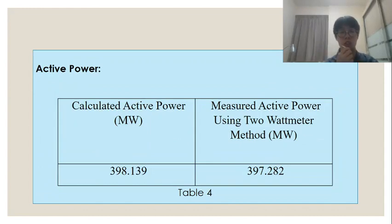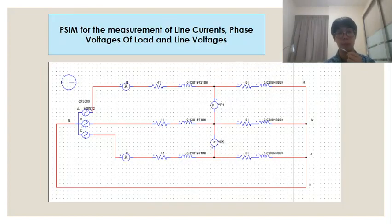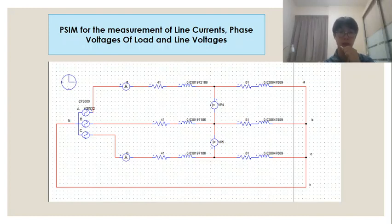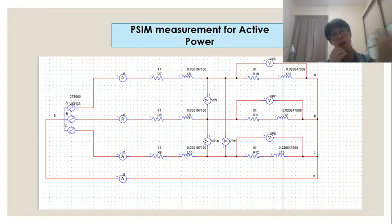Table 4 shows the values of active power, both calculated and measured. The calculated value for active power is 398.139 MW, and the measured active power using the two-watt meter method is 397.282 MW. This is followed by the figure constructed in PSIM for the measurement of line currents, phase voltages of load, and line voltages, and also the figure constructed in PSIM for the measurement of active power.